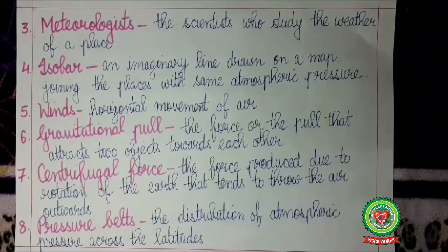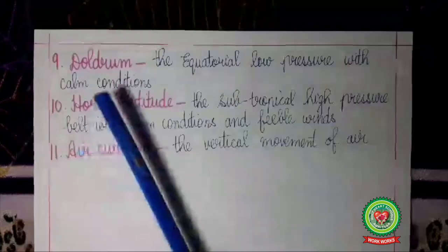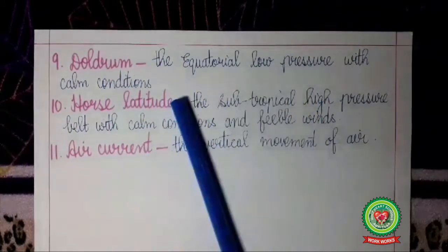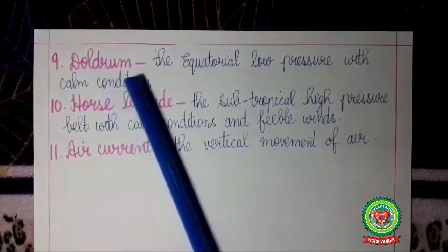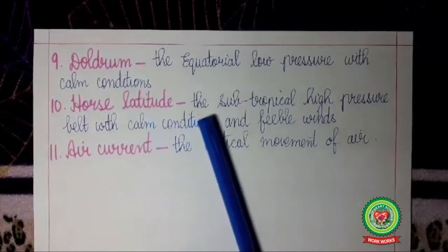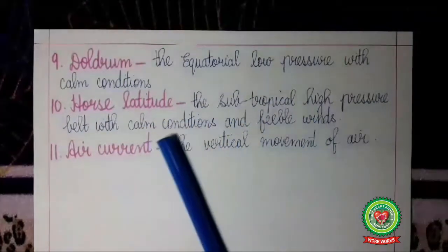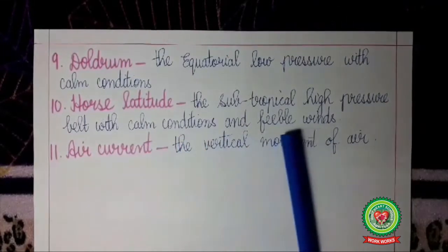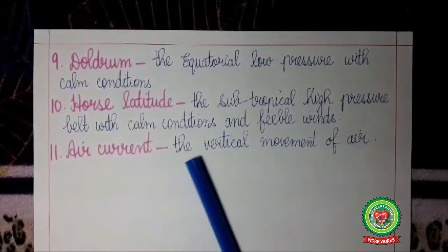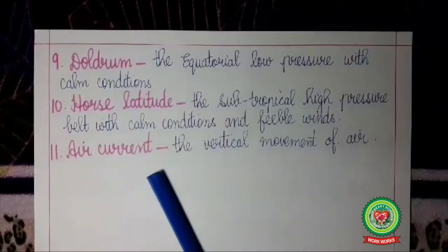Centrifugal force: the force produced due to rotation of the earth that tends to throw the air outwards. Pressure belts: the distribution of atmospheric pressure across the latitudes. Doldrums: the equatorial low pressure belt with calm conditions. Horse latitude: the other name for the subtropical high pressure belt with calm conditions and feeble (weak) winds. Air current: the vertical movement of air, also called conventional air current.